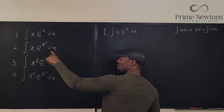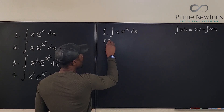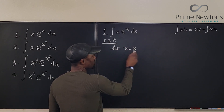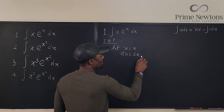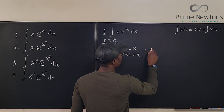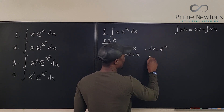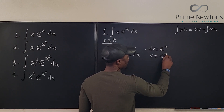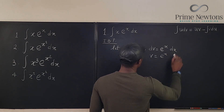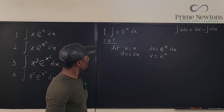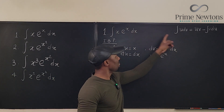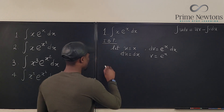For integration by parts, let u = x, so du = dx. And let dv = eˣ dx, so v = eˣ. Our assumption is that what we have is u dv, and we apply the formula: the integral of u dv equals u·v minus the integral of v du.